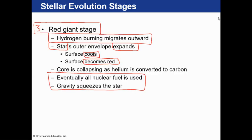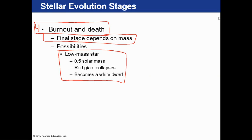When a star begins to run out of hydrogen in its core, it enters the red giant stage. That causes the star to expand, which cools it and makes it redder. Eventually, all that fuel is used up and gravity crushes and squeezes the star. There are several different possibilities for what can happen next.